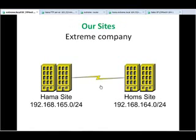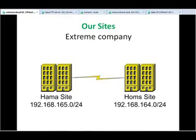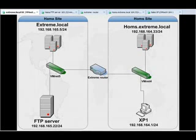This is our company — Extreme Company. It has two sites: Home Site and Home Site. Home Site has network address 192.168.165.0, and Home Site has network address 192.168.164.0. Home Site connects to Home Site by a link. In my lab, I have a router at this link. Let me show you our company layout.